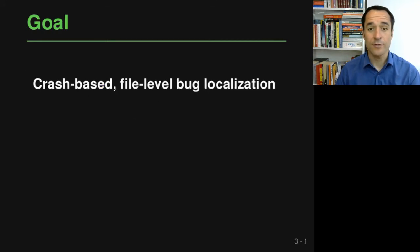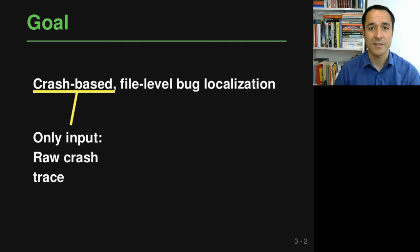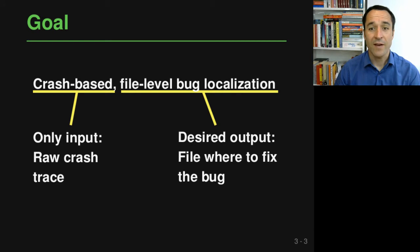Our goal in this work is crash-based file-level bug localization. Crash-based here means that the only input we are considering is a so-called raw crash trace — a file that basically contains evidence about the crash, such as stack traces and other kinds of information. File-level bug localization means that we want to predict the file or set of files in which to fix these bugs.